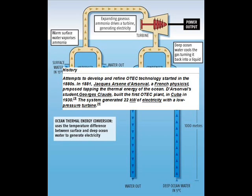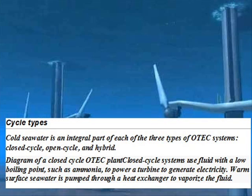In 1931, Nikola Tesla released 'Our Future Motive Power,' which describes such a system. In 1935, Claude constructed a plant aboard a 10,000-ton cargo vessel moored off the coast of Brazil, but weather and waves destroyed it before it could generate net power. Net power is the amount of power generated after subtracting the power needed to run the system. In 1956, scientists designed a 3 MW plant for Abidjan, Ivory Coast, but the plant was never completed because new finds of large amounts of cheap oil made it uneconomical.